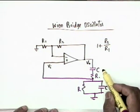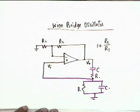The Wien bridge beta network produces a 0° phase shift using less components than the phase shift oscillator. The network consists of a series RC in one arm and a shunt RC in the other. A simple resistive potential divider could also produce 0° phase shift, but it is insensitive to frequency — its gain is the same at DC and at infinite frequency. We need a frequency-selective beta network to determine the oscillation frequency.